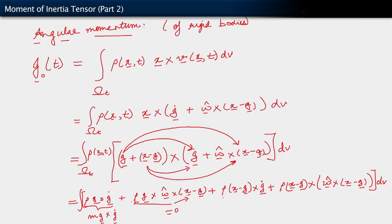So this term is equal to zero. For the same reason, this term also is equal to zero — because that integral ρ·(x minus g) dV equals zero, and ġ is just a function of time so it comes out of that integral. So this term also equals zero.